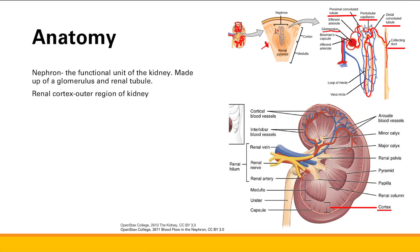Now I want to zoom out and look at the overall gross picture of the kidney and talk about the renal cortex. This is the outer region of the kidney, as you can see on the bottom right — all of this outer region is the renal cortex.